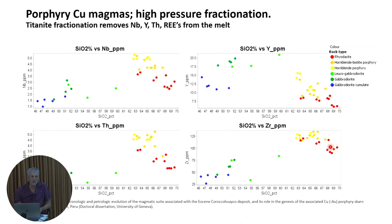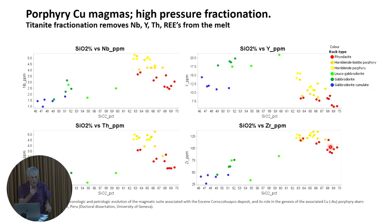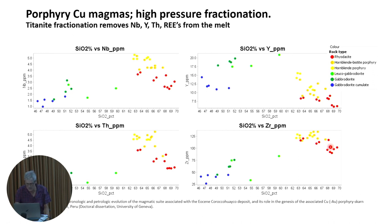In porphyry copper magmas, these elements start behaving like compatible elements. It turns out that maybe 60% of Archaean granites are like porphyry copper magmas, except they don't have sulfur. The kinds of melting processes we see in porphyry copper magmas also occurred in the Archaean — nothing to do with subduction, but all about the composition of the source material, the water content, and the pressure. We're going to see that in the Yilgarn granite dataset in a minute.